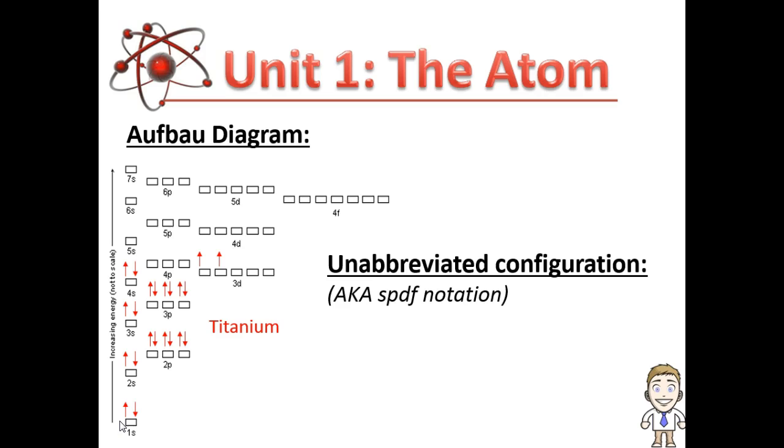More common than filling out an Aufbau diagram is writing what's called an unabbreviated configuration or SPDF notation. Instead of putting in all the little arrows, you very simply make a list of each orbital and how many electrons are in it. 1s indicates the orbital, the little superscript 2 indicates how many electrons are in that orbital. So 2p has 6 electrons, 3s has 2, 3p 6, 4s 2, followed by 3d 2 at the very end. You list them in the same order as the Aufbau diagram has the electrons filled.